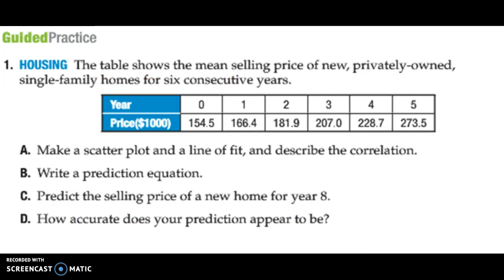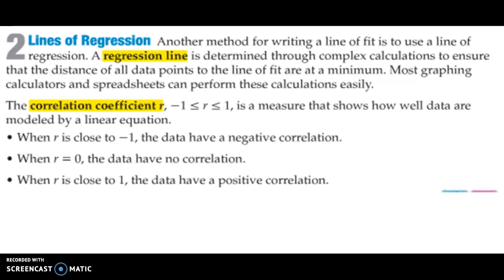Here's a guided practice problem. You can do the same. Plot it out, describe its correlation, positive or negative, write a prediction equation, predict the selling price of a new home in year 8, and then how accurate does your prediction be? That's an opinion question. Now, the next thing we have is a regression line.